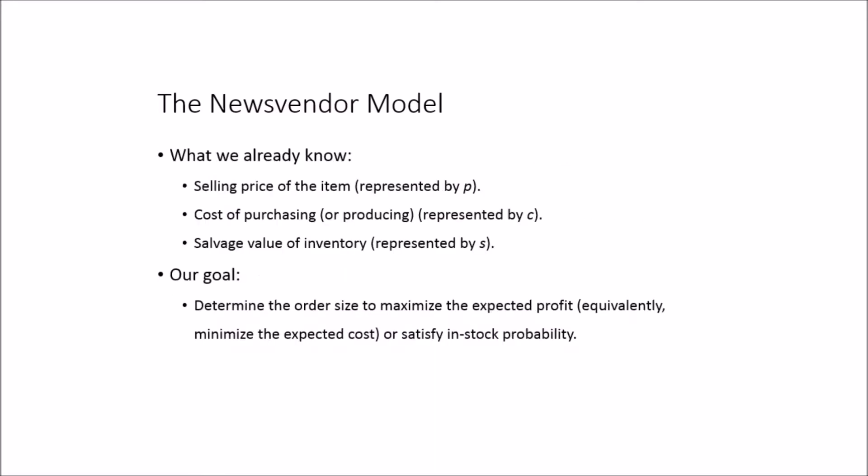Before we start, here is what we already know. We know the selling price of the item, represented by P; the cost of purchasing, represented by C; and the salvage value of inventory, represented by S. What we want to do is determine the order size to maximize the expected profit. Maximizing expected profit is also equivalent to minimizing the expected cost.